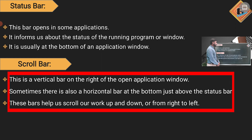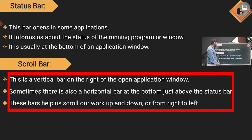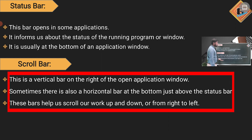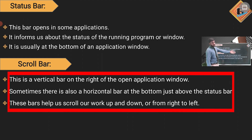Sometimes there is also a horizontal bar at the bottom, just above the Status Bar. These bars — the Scroll Bars — help us to scroll our work up and down and from right to left. Students have seen these on the right side of the page.